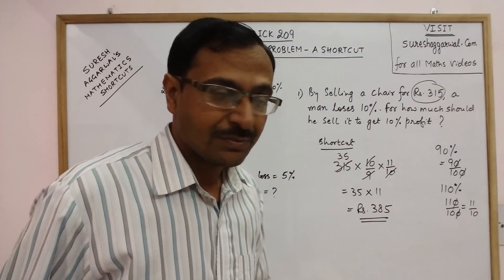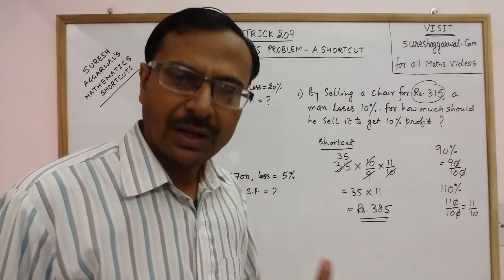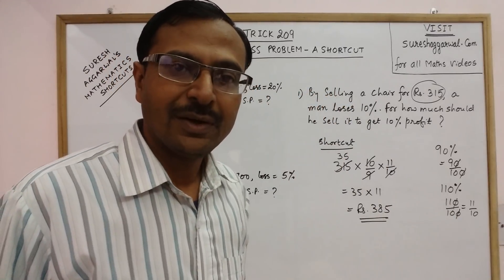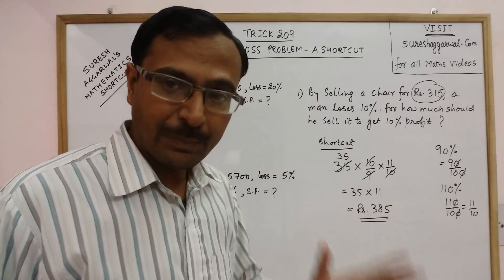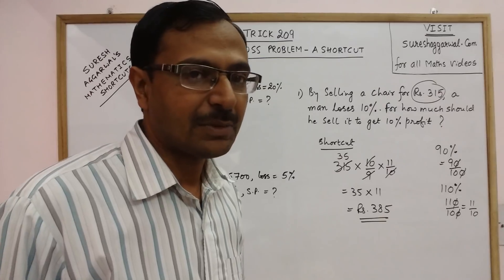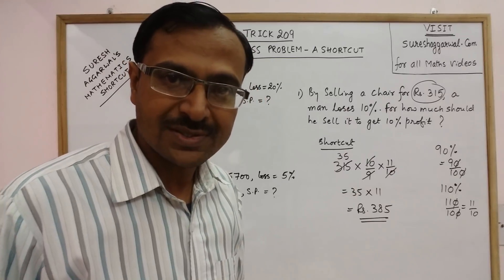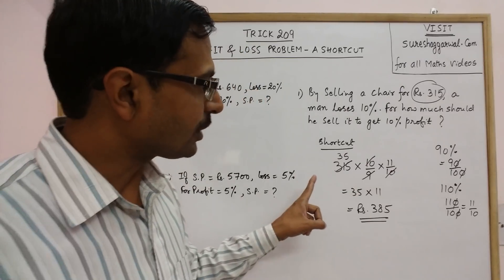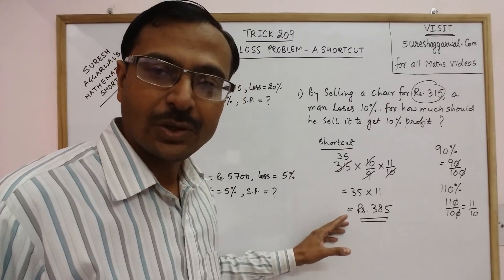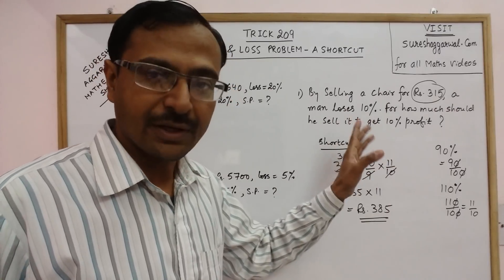This is a very complex question. When students learn profit and loss at preliminary stages of class 7th or 8th, they solve using traditional method and consume even one page for getting the answer. But in competitive exams you don't have that much time, so you need to know this amazing shortcut which allows you to find the new selling price in one step.